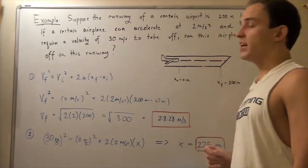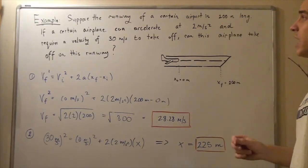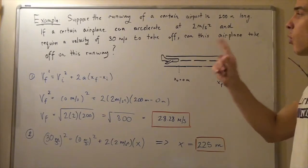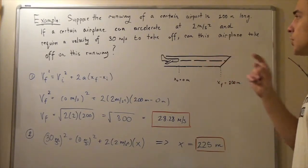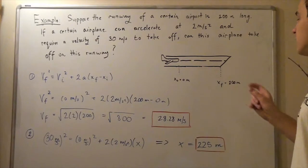Suppose the runway of a certain airport is 200 meters long. If a certain airplane can accelerate at 2 meters per second squared and requires a velocity of 30 meters per second to take off, can this airplane take off on this runway?